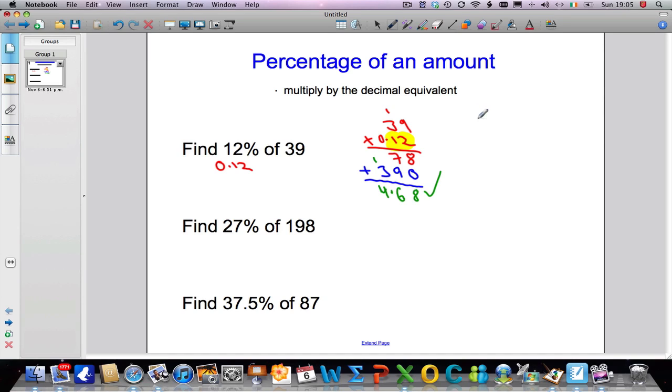Now, you could always do it this way. You can always work out 10%. You could work out 1%. And then double the 1% to get 2%. And then add the 10% and the 2% to get 12% overall. That, in my opinion, is an awful lot longer than doing this. So I think this is the best method to go with.